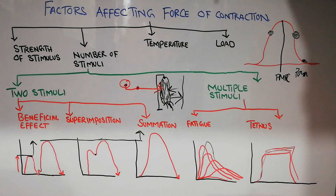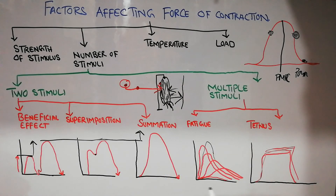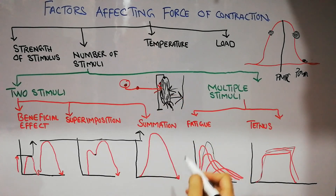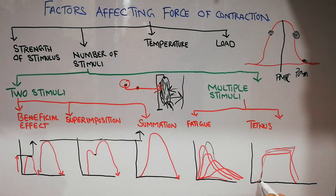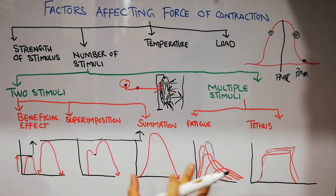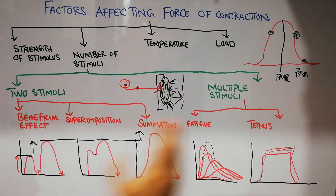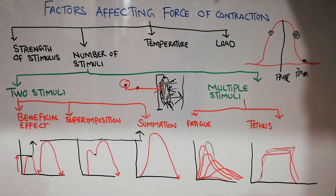There is another effect known as treppe. Treppe is similar to tetanus in that many stimuli are given to the muscle again and again with increasing strength, but the frequency is less than that required for tetanus. At this lower frequency, repeated stimulation contributes to progressively greater force of contraction — similar to summation — and that effect is known as treppe.